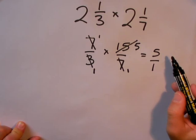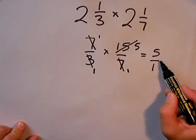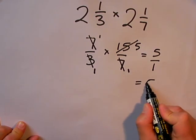5 over 1, remember, is the same as 5 whole ones, so that's my answer.